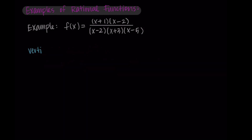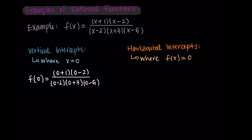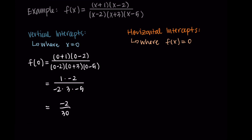Now I want to find the vertical intercepts and horizontal intercepts, then write the domain. For vertical intercepts, x equals 0, so I substitute 0 for x: 0 plus 1 times 0 minus 2, divided by 0 minus 2 times 0 plus 3 times 0 minus 5, which gives 1 times negative 2 divided by negative 2 times 3 times negative 5, that's negative 2 over 30. Simplifying, negative 2 over 30 equals negative 1 fifteenth. So the vertical intercept is at the point 0, negative 1 fifteenth.